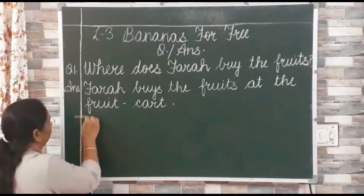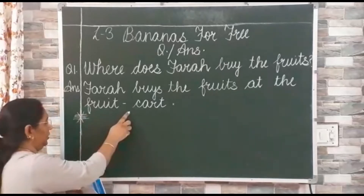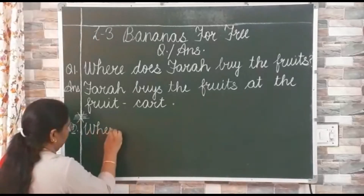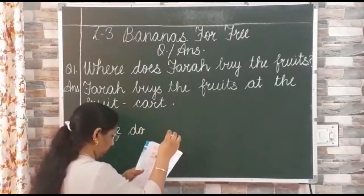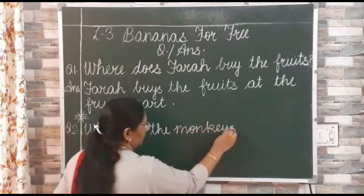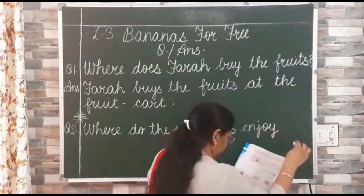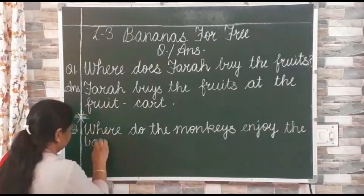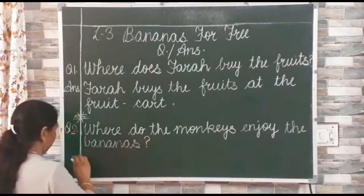Now leave one line. I am putting a cross — that means you have to leave one line after writing the sentence. Now we will write question number 2: 'Where do the monkeys — M-O-N-K-E-Y-S — enjoy — E-N-J-O-Y — the bananas — B-A-N-A-N-A-S?' Now the question is over, so we will put a question mark. Now let us write the answer in the next line.